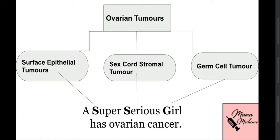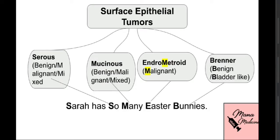I've created a mnemonic to memorize this classification: 'A Super Serious Girl Has Ovarian Cancer.' The 'S' from 'Super' denotes surface epithelial tumors, the 'S' from 'Serious' denotes sex cord stromal tumors, and the 'G' from 'Girl' denotes germ cell tumors. It's a convenient way to learn this classification.